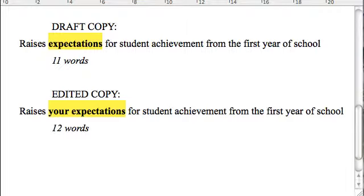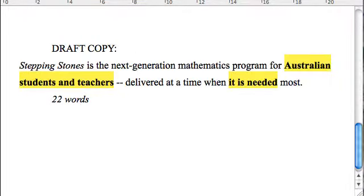Now, our last example is a bit trickier, a bit more complicated. It reads like this. Stepping stones is the next generation mathematics program for Australian students and teachers, delivered at a time when it is needed most. And this has 22 words.